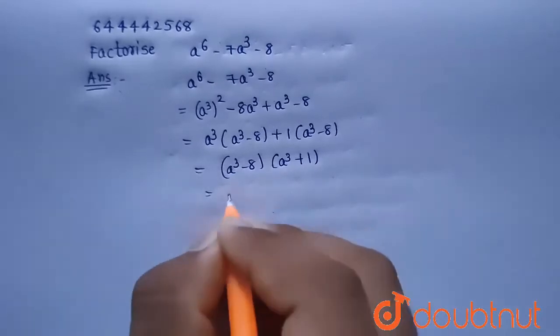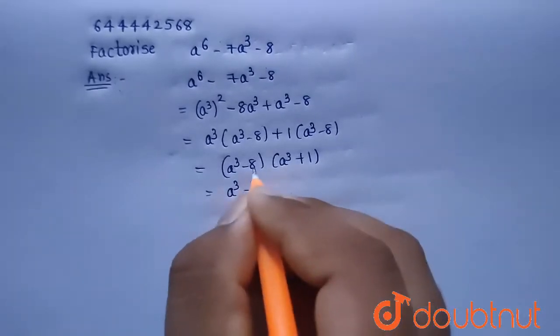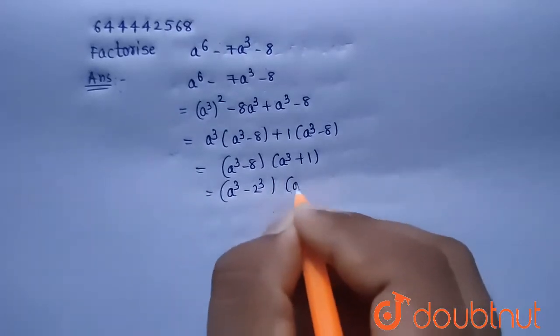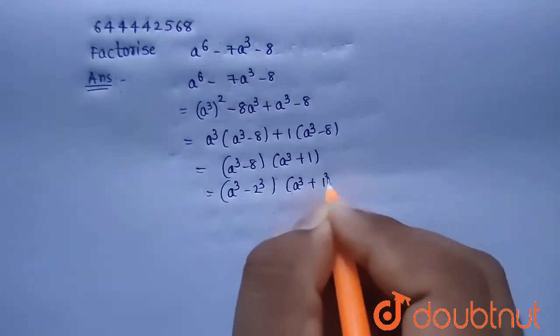Now we can write this as a^3 minus 2^3, because 2^3 is nothing but 8, and similarly this can be written as a^3 plus 1^3.